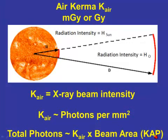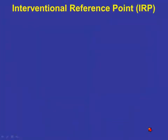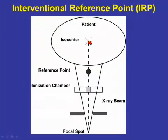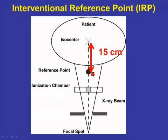The kerma area product is related not to radiation burns, but to the patient cancer risk, and I will have another series of talks that will explain it in interventional radiology. Now, the second part — so now we know what air kerma is — is the interventional reference point. In IR, we rotate an imaging chain around an imaginary point called the isocenter. We take a point 15 centimetres closer to the focal point, and that is the interventional reference point.